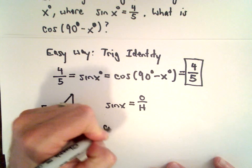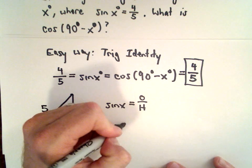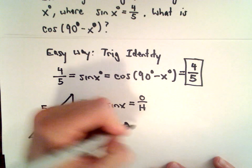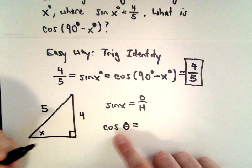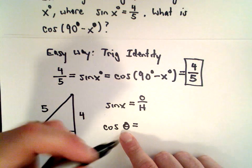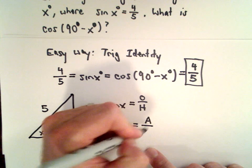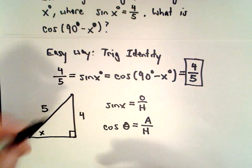Remember that cosine of an angle—I'm going to call it theta—cosine of theta is the ratio of the adjacent side to the hypotenuse.